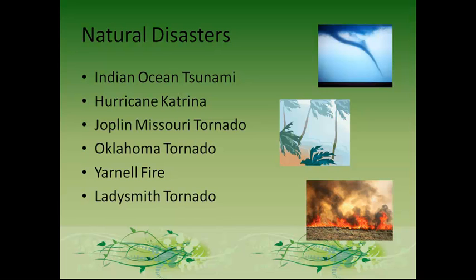Hurricane Katrina was a tropical storm that formed off the coast of the Bahamas in August 2005. When she hit land, she caused 1,833 deaths and over $81 billion in damage. Packing winds of 175 miles per hour at its height, it left millions homeless and without income. The hardest-hit areas were Mississippi, Louisiana, the Bahamas, and South Florida. At its crescendo, 53 levee breaches around New Orleans flooded over 80% of the city.